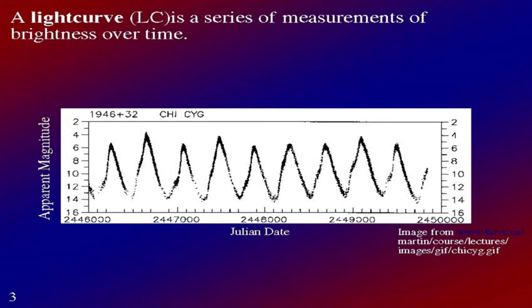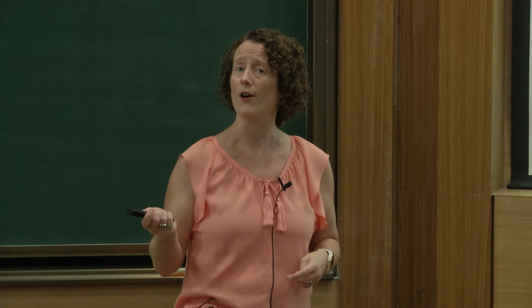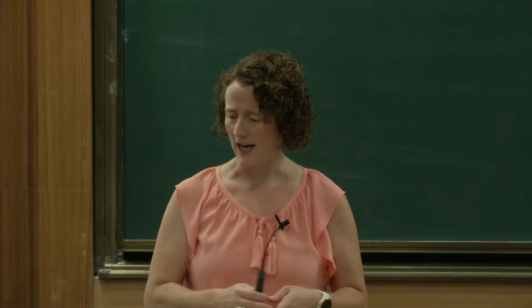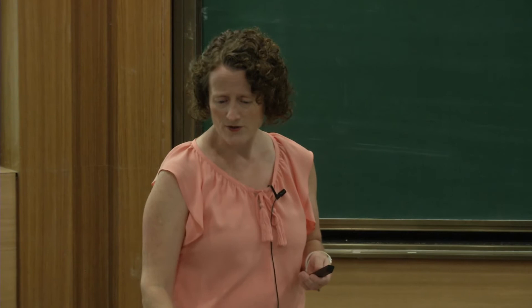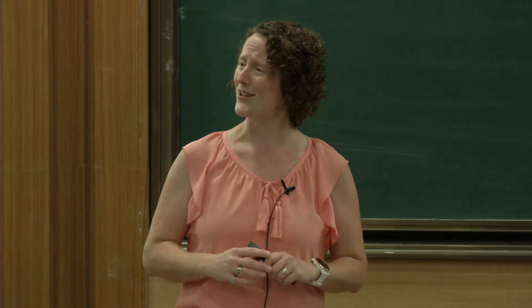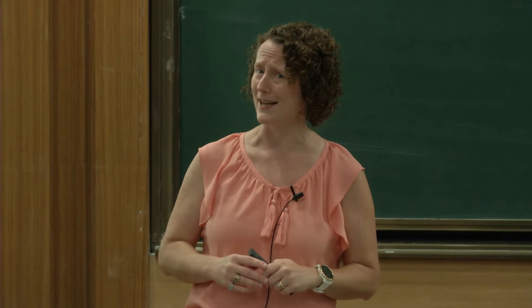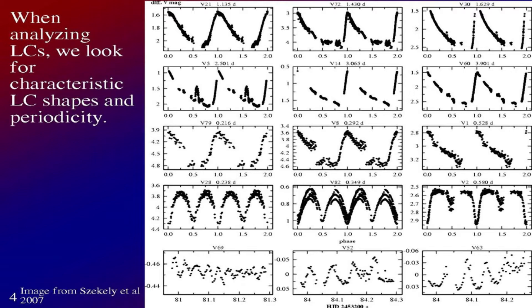Today we're going to be thinking about more periodic types of objects that periodically change brightness over time. You can see this object is getting brighter, dimmer, brighter, dimmer over a pretty long time scale — look at that time axis. This is a very slow-changing variable object; it's a Mira star, a very long-period red giant or red supergiant. This is just an example of a light curve. You'll wish you get a light curve that looks this good — it's very well defined with a lot of data points.